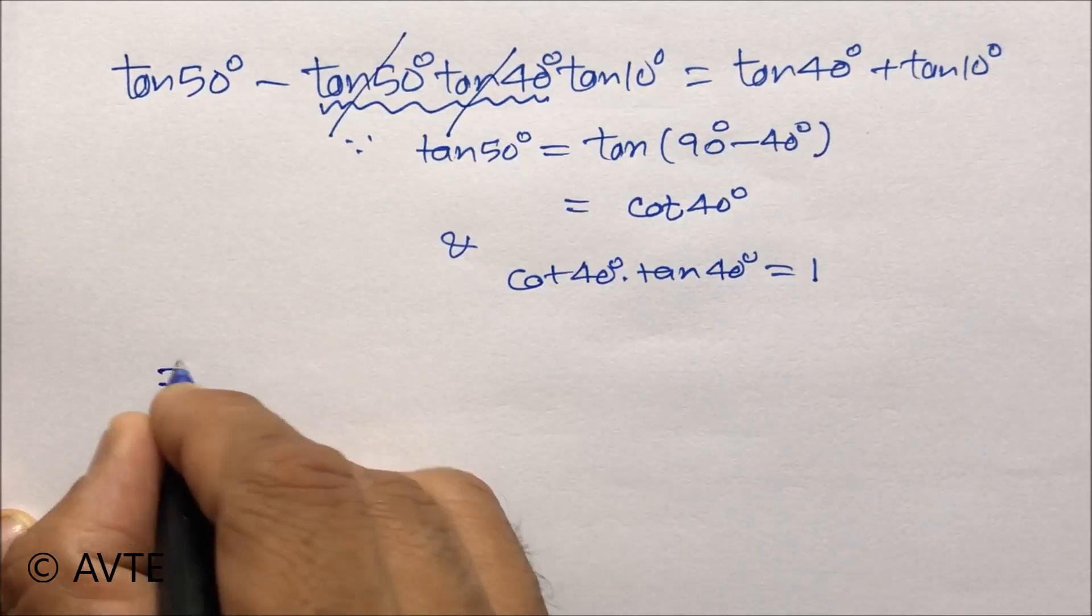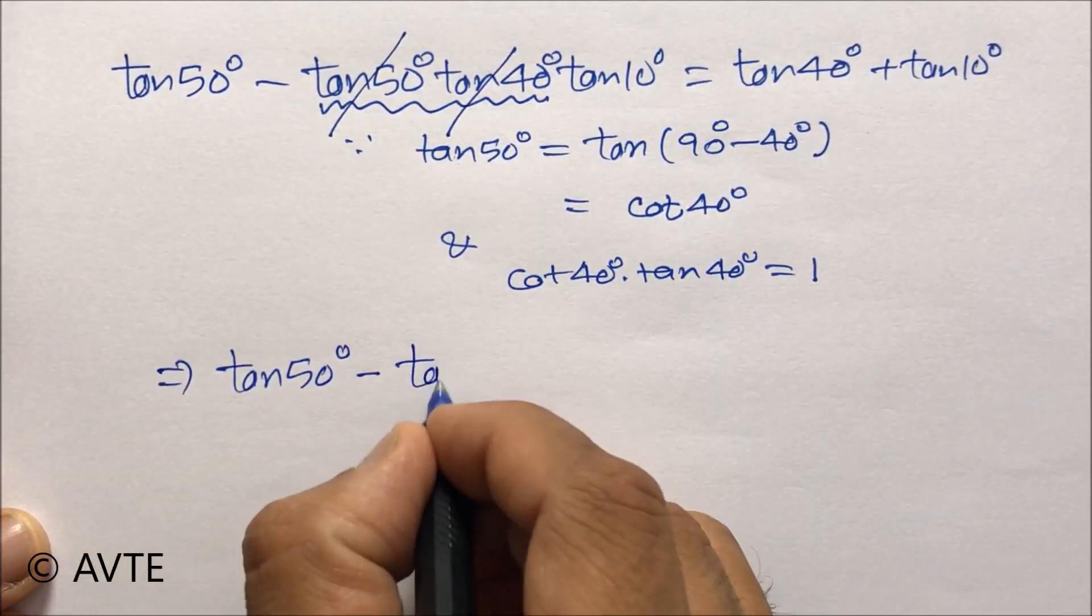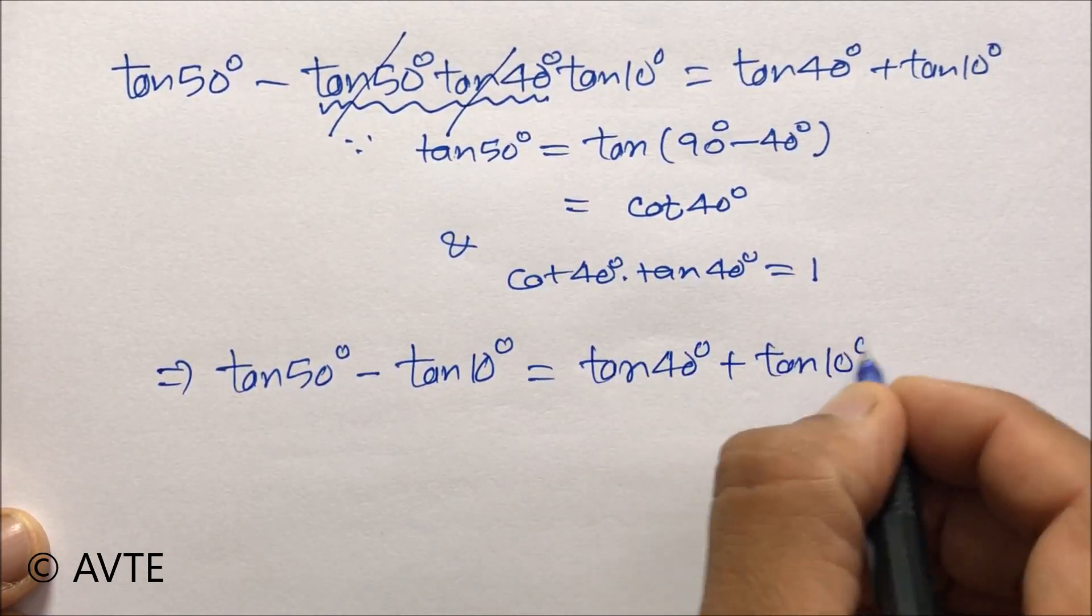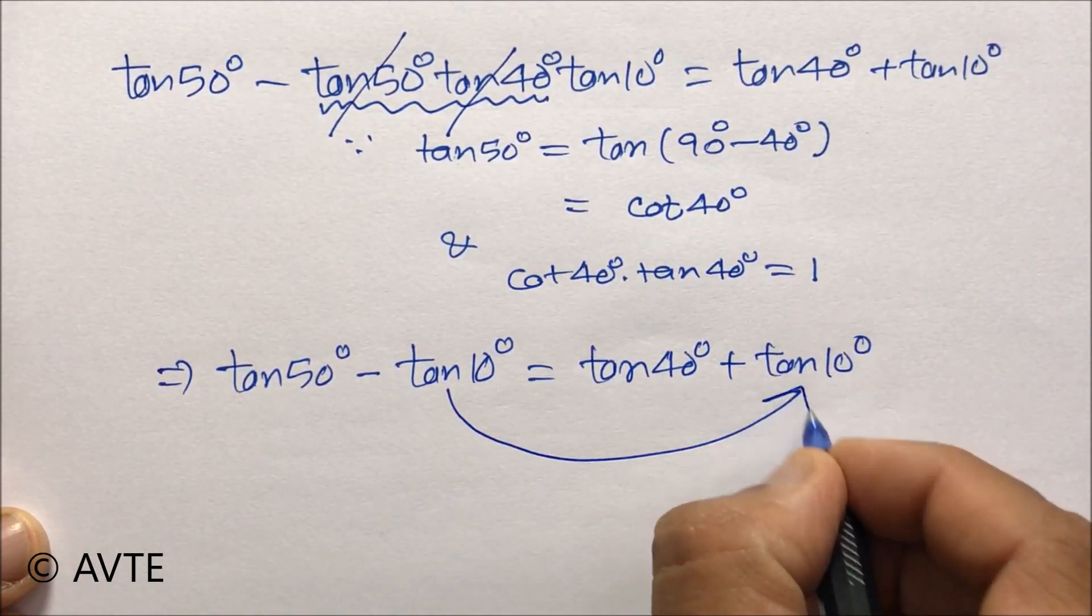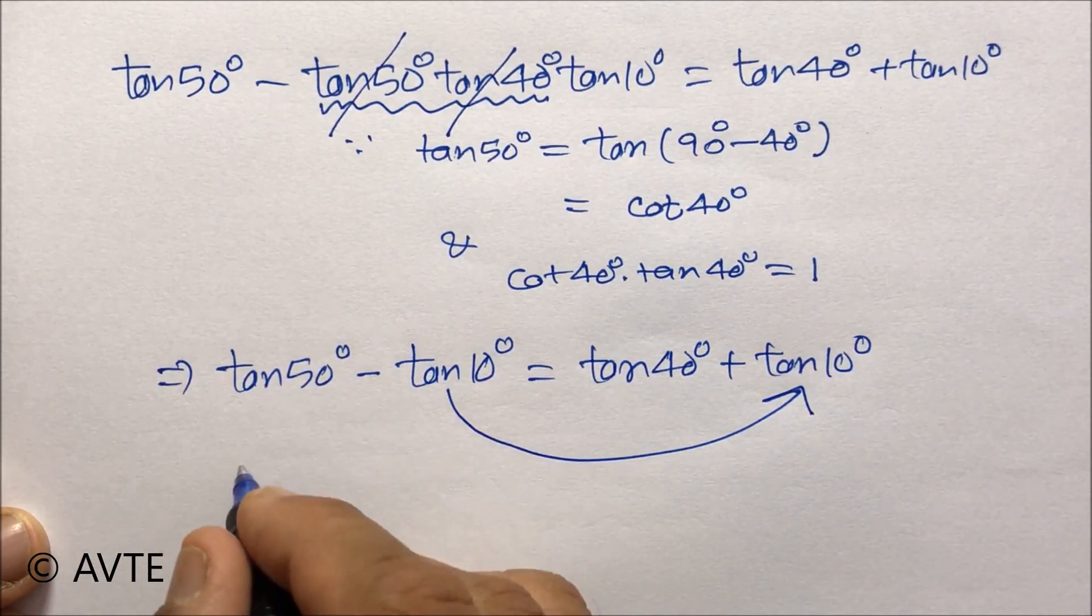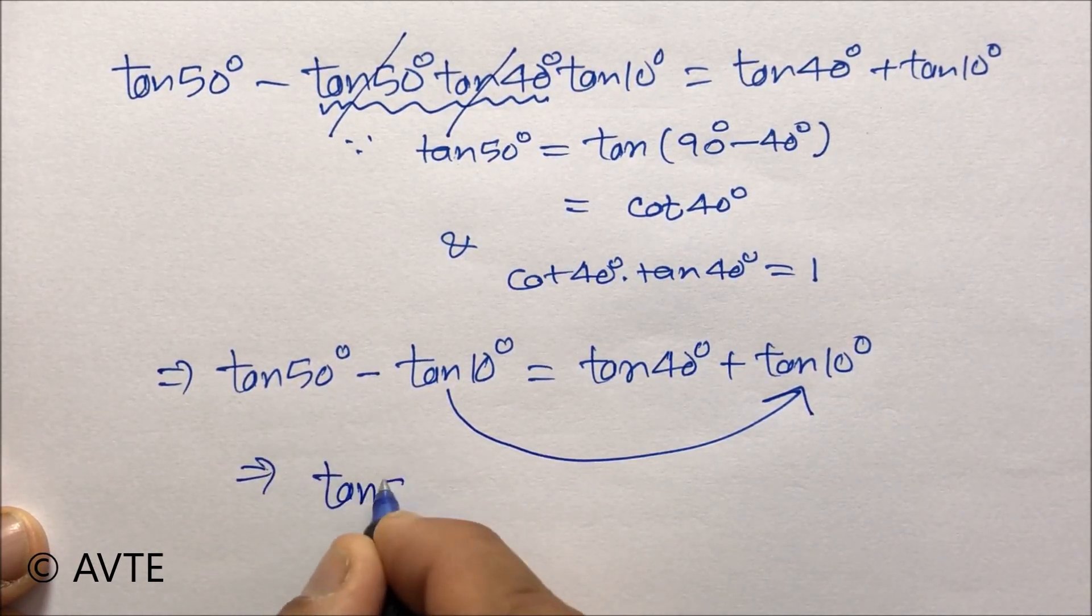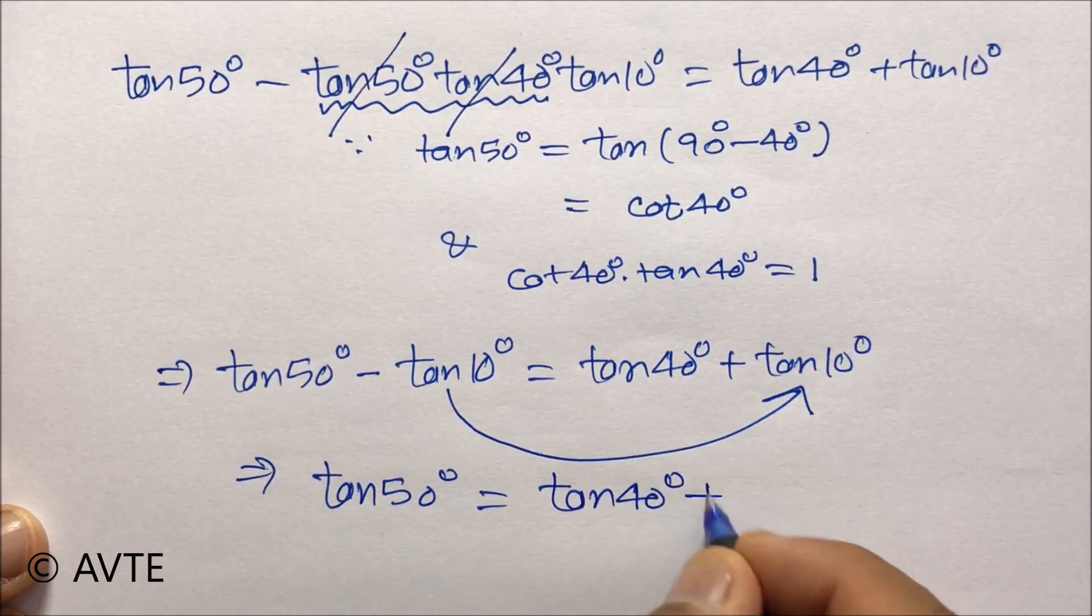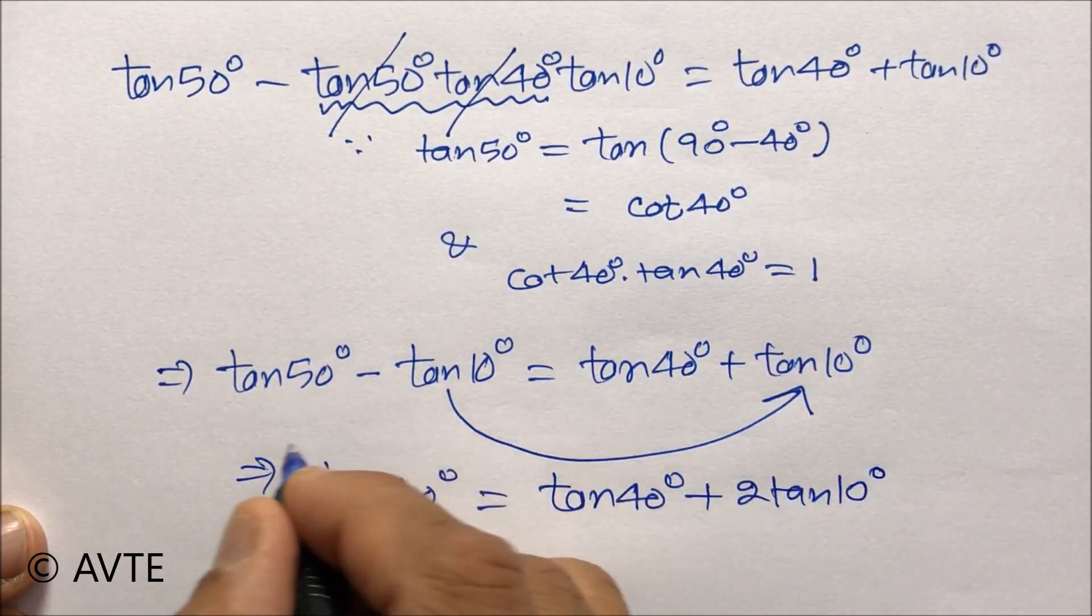So this is, and by transforming the minus tan 10 degrees to the other side we get the answer, that is tan 50 degrees is equal to tan 40 degrees plus 2 times tan 10 degrees.